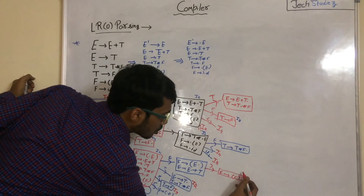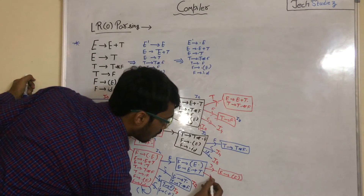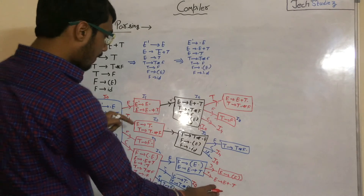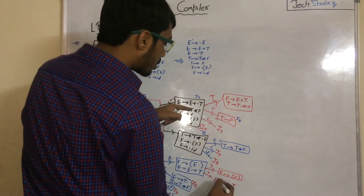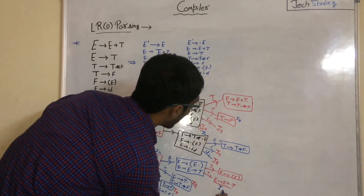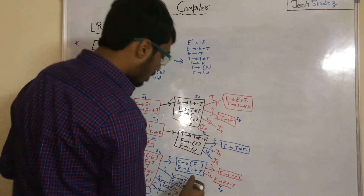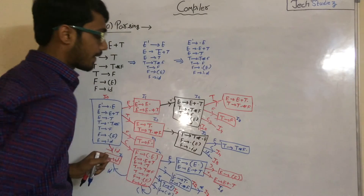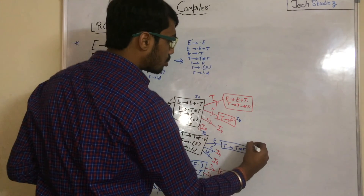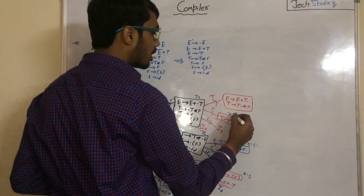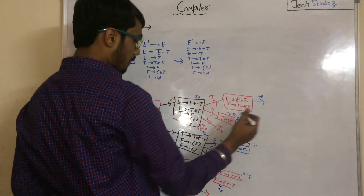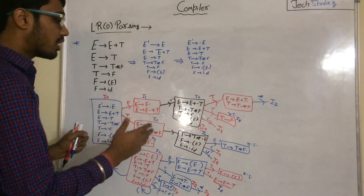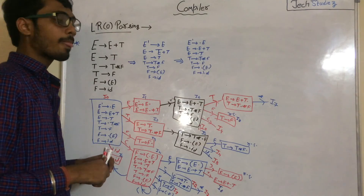Apply GOTO with plus sign — we get E to E plus ·T, which is transition I6. In this state, apply GOTO with star — the transition we get is I7. These are reduced states. Apply GOTO with star — we get T to T star ·F, which is transition I7. This completes the canonical collection set. Thank you for watching, please subscribe to the channel.